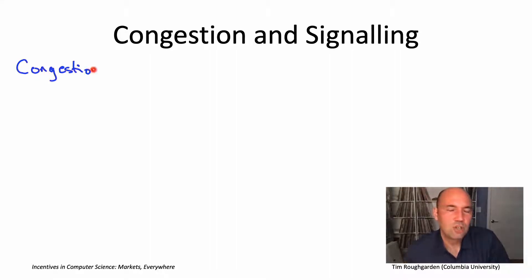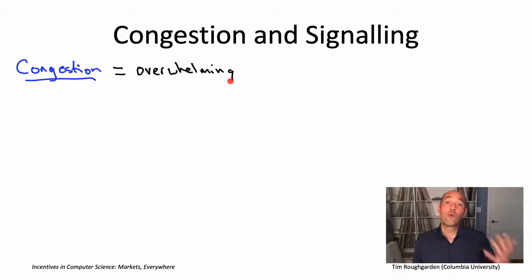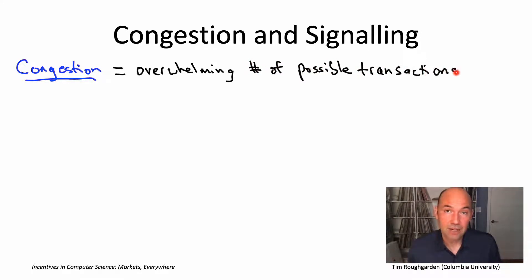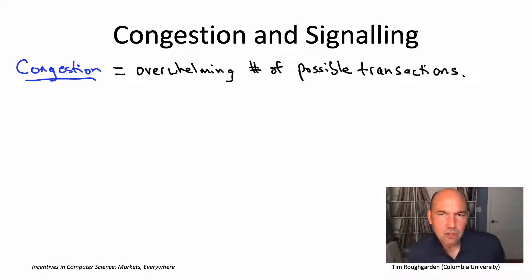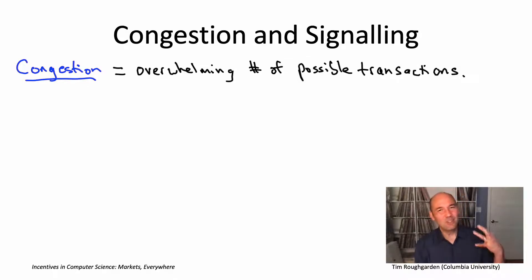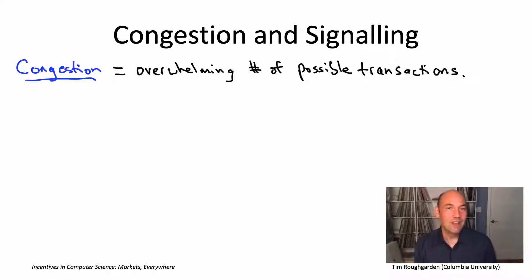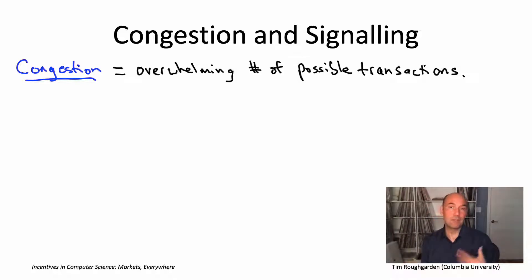A market suffers from congestion when you have too much of a good thing, when users are just overwhelmed by the number of possible transactions. Congestion is sort of an inevitability in the kinds of markets we're talking about where there are strong network effects. Congestion is the problem you want — much better to have more participants than you know what to do with than too few. But still, if you have an overwhelming number of available transactions, you need to do something to keep the market running smoothly.